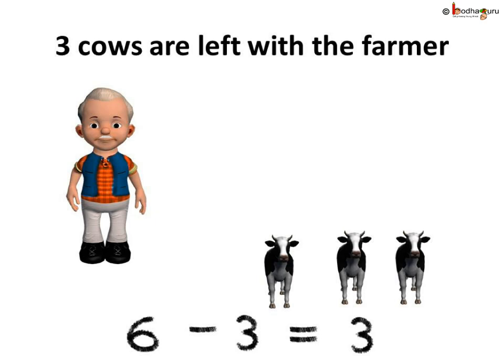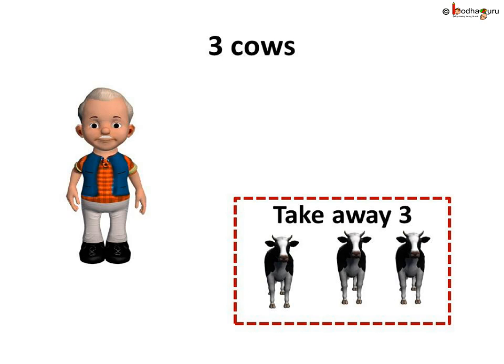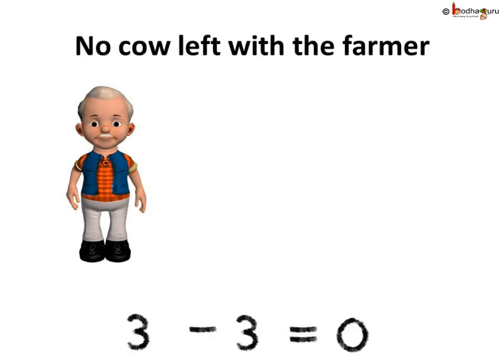So, three cows are left with the farmer. As 3 cows are left with the farmer and three brothers are there, we can take away a group of three cows again. So, let us take out a set of three cows. 3 minus 3 is equal to 0. Now nothing is left with the farmer. He gave away all the cows to the three sons.